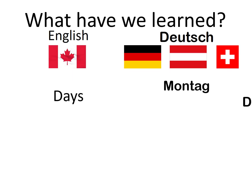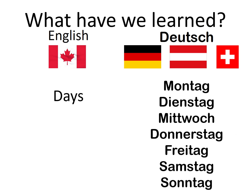We also learned the days of the week. Remember that just as most of our days end in the word 'day,' most German days end in the German word for day — Tag — with one exception: Wednesday is Mittwoch, meaning mid-week. I'll say the word and you repeat after me. Montag, Dienstag, Mittwoch, Donnerstag, Freitag, Samstag, and Sonntag. Excellent — very good work.